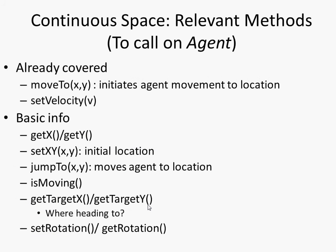Within this continuous space, the two most important things you use are 'move to' — sending an agent in a certain direction — and 'set velocity.' You can also get X, get Y, get their location, set X and Y, set their initial location. You could jump them to a space — if you wanted these elephants to suddenly teleport to another place, you could do so. This is agent mobility discontinuously. You can ask if they're currently moving, where they're heading to, and set their rotation on screen.